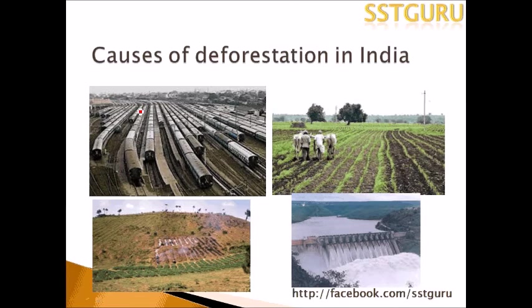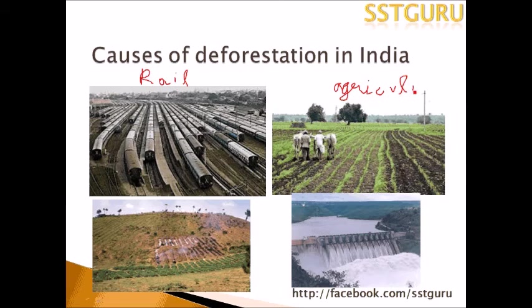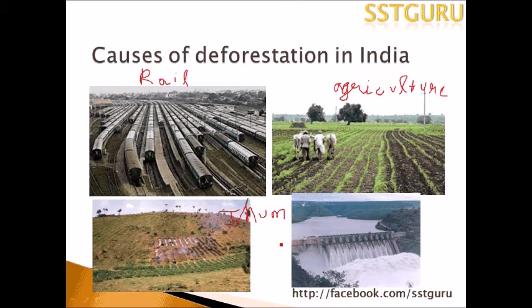There are many causes for deforestation in India. When the British were here, they took away large tracts of land, especially jungles, to create a vast rail network across the subcontinent, resulting in heavy forest loss. Then, due to the ever-growing population, large areas of land were needed for cultivation, requiring trees to be cut, leading to further loss of valuable forest land.